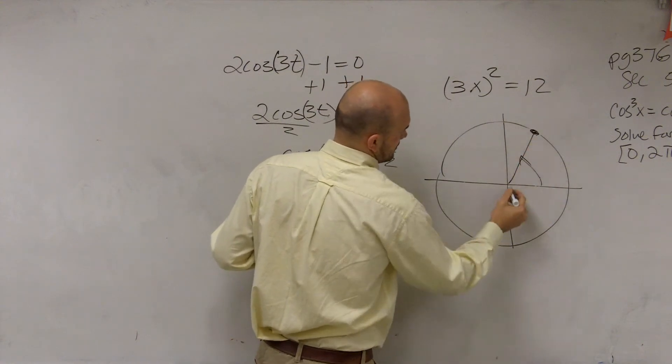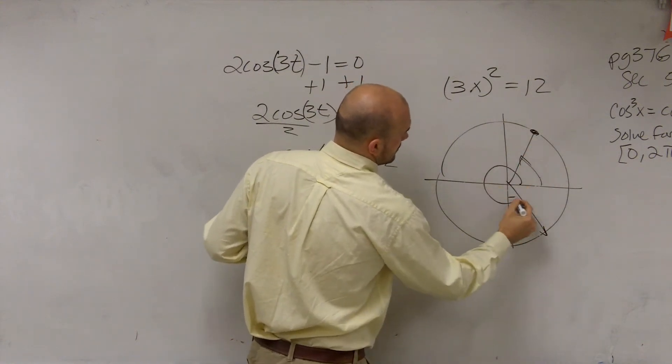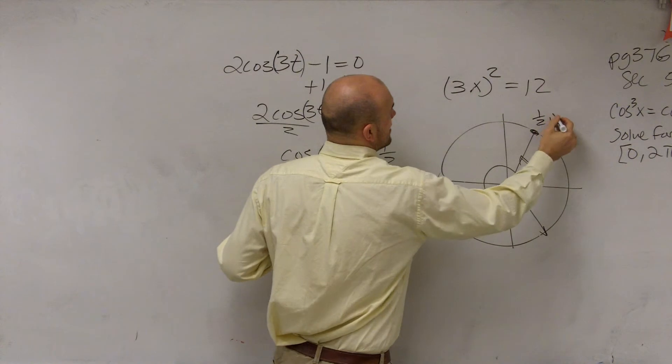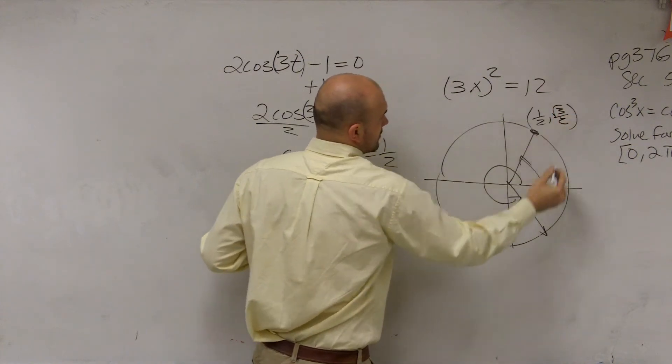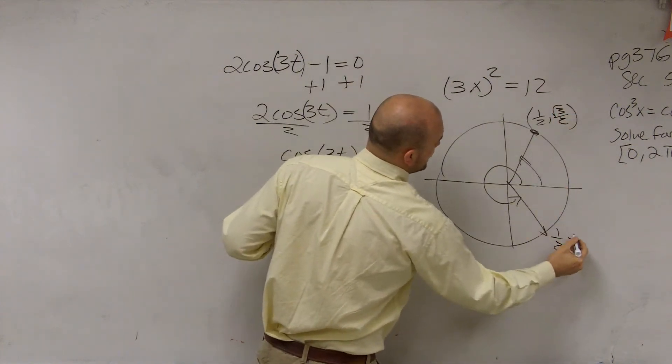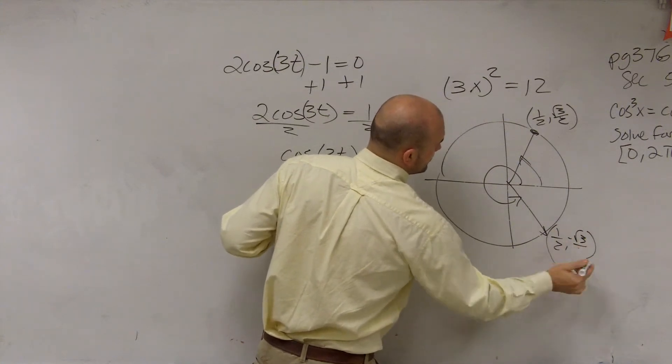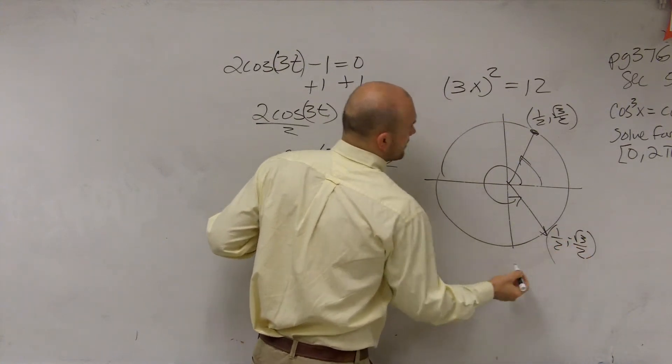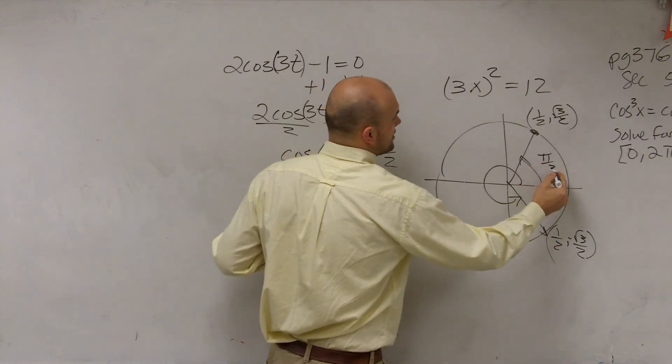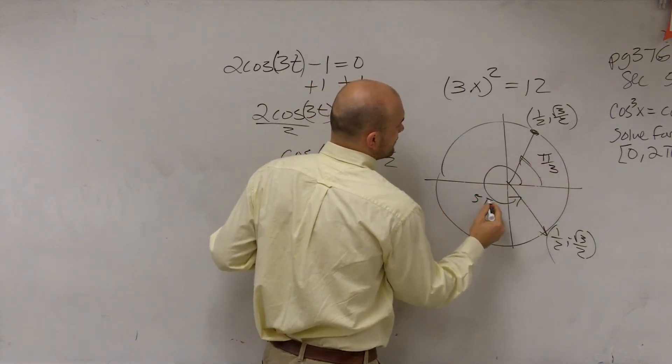So we have 1 half comma square root of 3 over 2. And we have 1 half comma negative square root of 3 over 2. That's a horrible 2. So this angle is pi thirds. And this angle is 5 pi over 3.